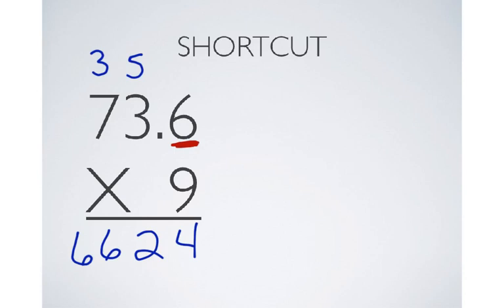with 73.6, there is one place after the decimal. With 9, there's no places after the decimal. So, with this 1 here, I need to come in one place to make sure my answer has one decimal place as well.